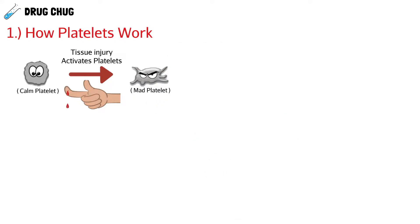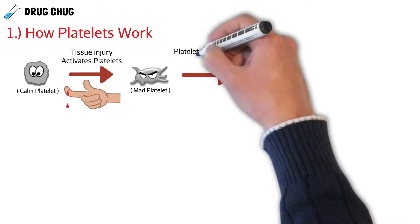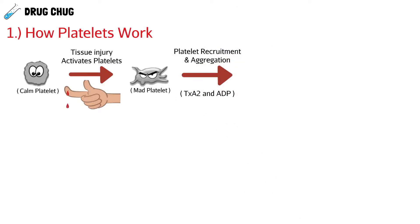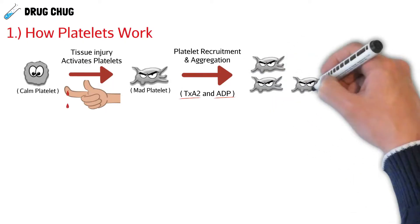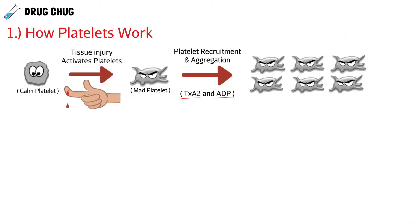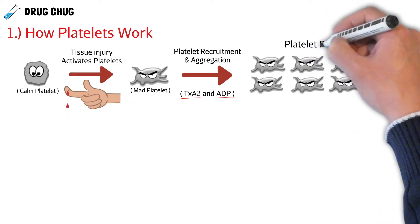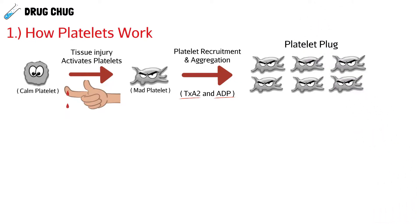They start becoming aggressive, and once they're in this active aggressive form there are two signals we look for: thromboxane A2 and ADP. These two signals cause platelet recruitment and aggregation — the angry platelets all coming together as one team. This is referred to as a platelet plug, which is a very weak blood clot.